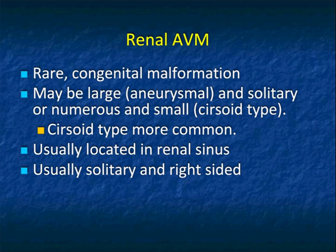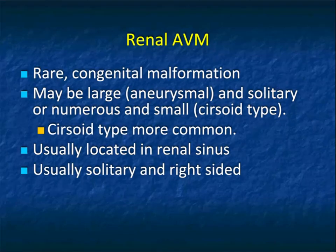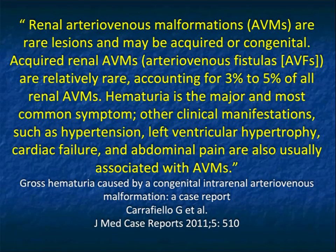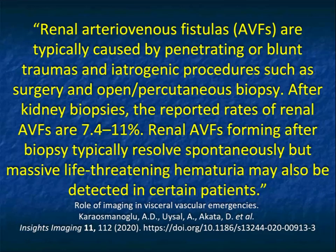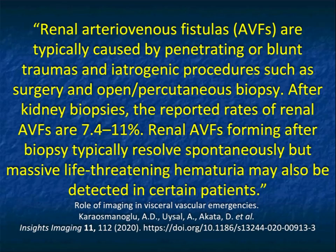Renal AVMs are rare. They're often congenital malformations — they can be large and solitary or small and numerous. They're usually located near the renal sinus, typically solitary, and more commonly right-sided. Renal AV malformations can be acquired or congenital. Acquired renal AVMs or AV fistulae account for about three to five percent of all renal AVMs. Hematuria is the most common symptom, followed by hypertension and abdominal pain. AV fistulas are more commonly caused by penetrating trauma like a biopsy or MVA. After kidney biopsies, the reported rates of AV fistula are up to 11 percent, though they typically resolve spontaneously.